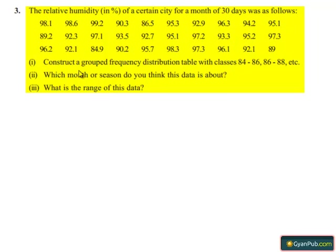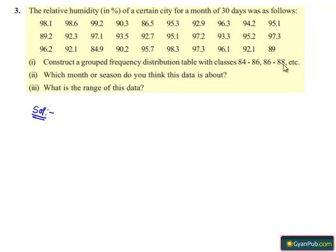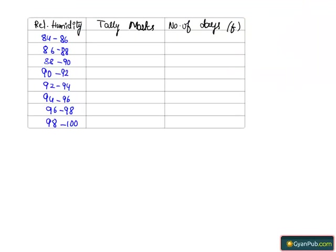First, we construct a grouped frequency distribution table with classes 84 to 86, 86 to 88, and so on. Relative humidity is taken in grouped data form, tally marks are recorded, and the number of days is taken as frequencies.